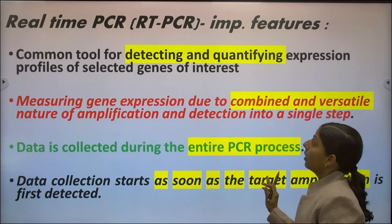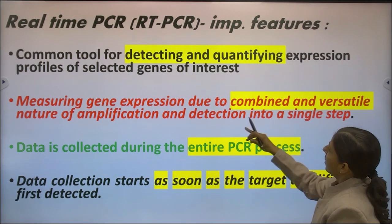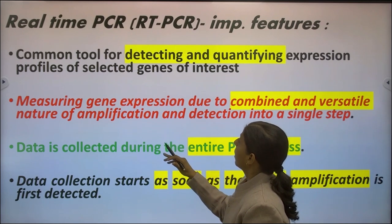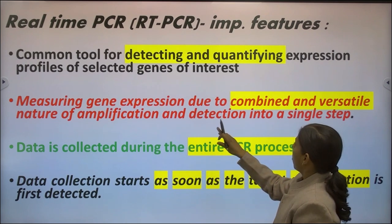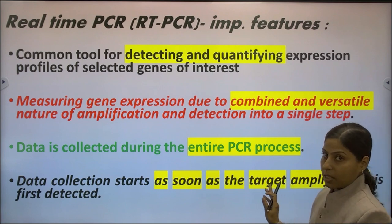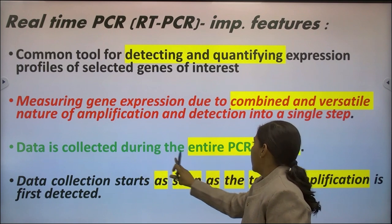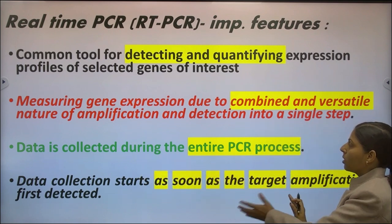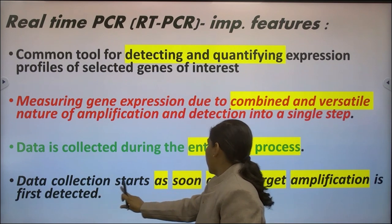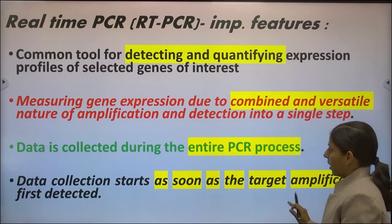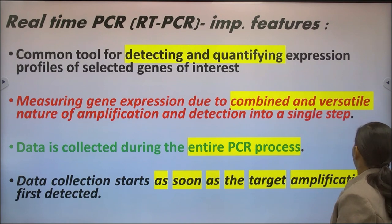Real-time PCR, abbreviated as RT-PCR, is a common tool for detecting and quantifying gene expression. It is the advancement of the standard PCR technique and has changed the way of measuring gene expression because it combines amplification and detection into a single step. It is a versatile combined technique where data is collected during the entire process, irrespective of end result. Data collection starts as soon as the target amplification is first detected — meaning as soon as fluorescence is detected, the target amplification is determined.